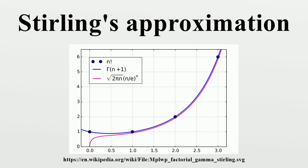This is shown in the next graph, which shows the relative error versus the number of terms in the series for larger numbers of terms. More precisely, let s be the Stirling series to t terms evaluated at n. The graphs show that when small, this is essentially the relative error. Writing Stirling's series in the given form, it is known that the error in truncating the series is always of the same sign and at most the same magnitude as the first omitted term. More precise bounds, due to Robbins, valid for all positive integers n, are also established.